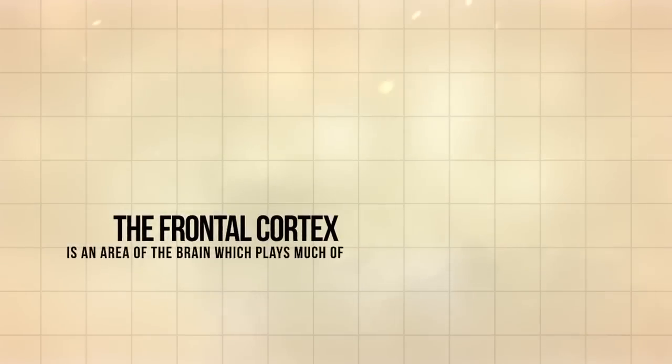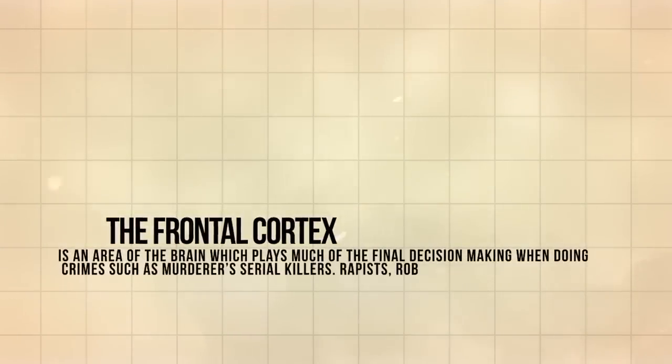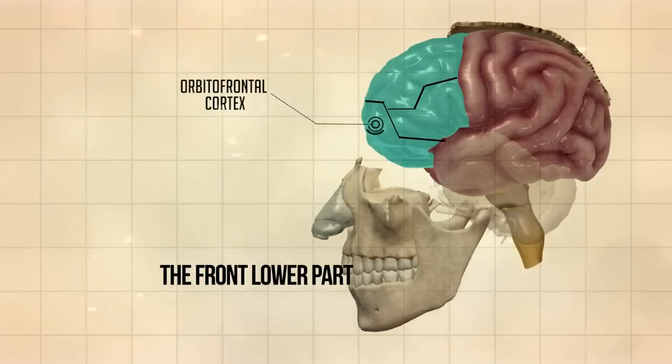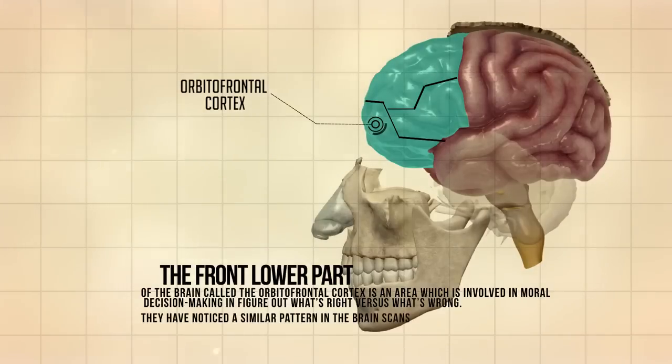The front lower part of the brain, called the orbital frontal cortex, is an area which is involved in moral decision-making, in figuring out what's right versus what's wrong. They have noticed a similar pattern in the brain scans of criminals in this region.